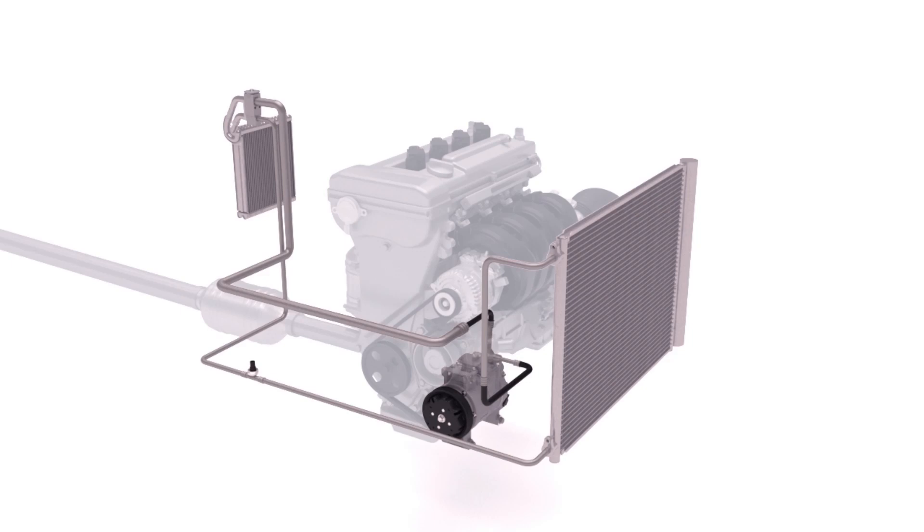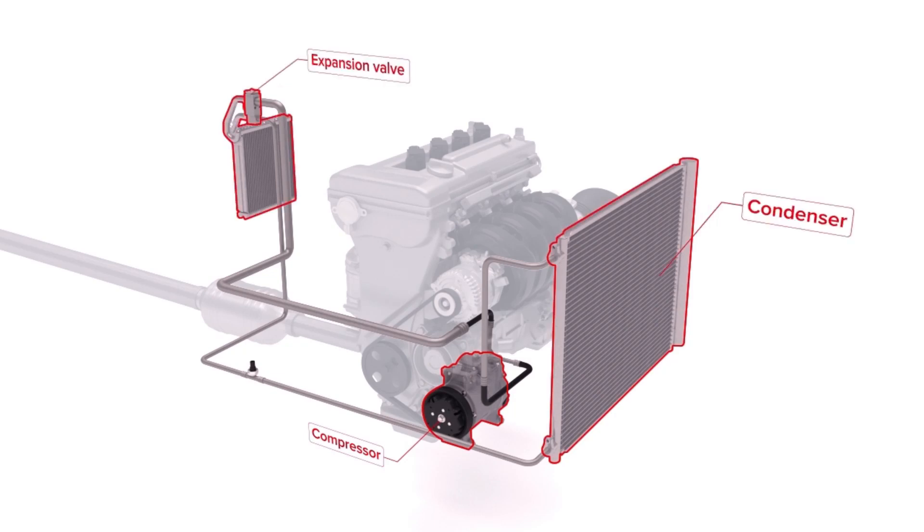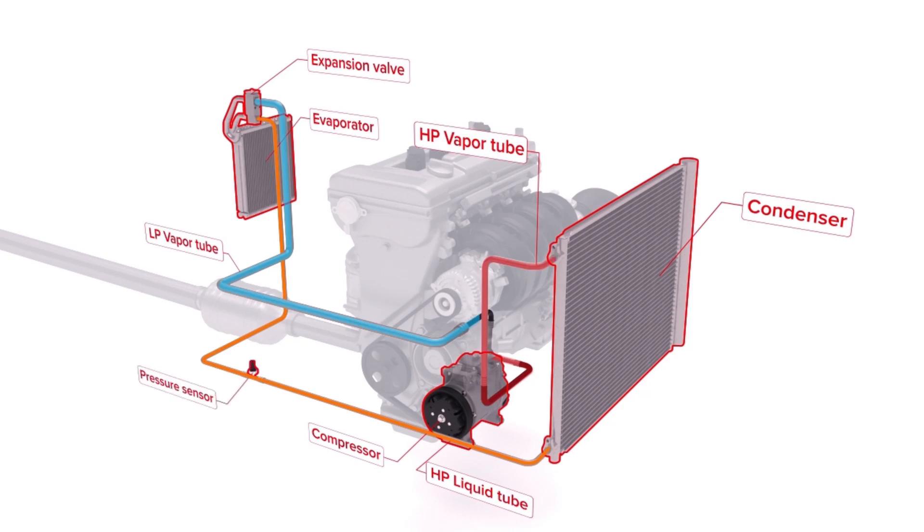The main components of an air-conditioned system are the compressor, the condenser, the expansion valve and the evaporator, and the refrigerant used to absorb the heat in most air conditioning systems is known as R134A.